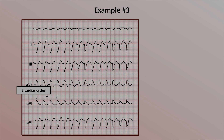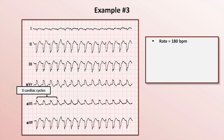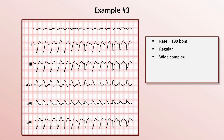In each 1-second interval, there are almost exactly 3 complete cardiac cycles. Three cardiac cycles in 1 second means 180 cardiac cycles in 1 minute — therefore the rate is about 180 beats per minute. It's regular, but the QRS width is slightly greater than 120 ms, making this a wide complex tachycardia.